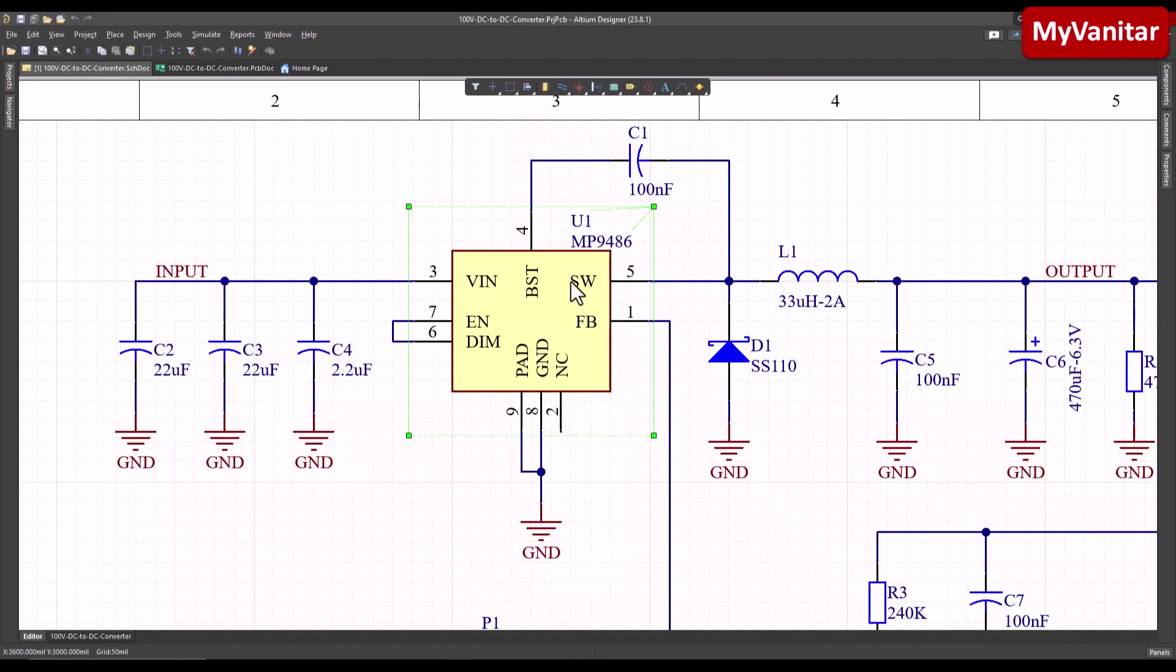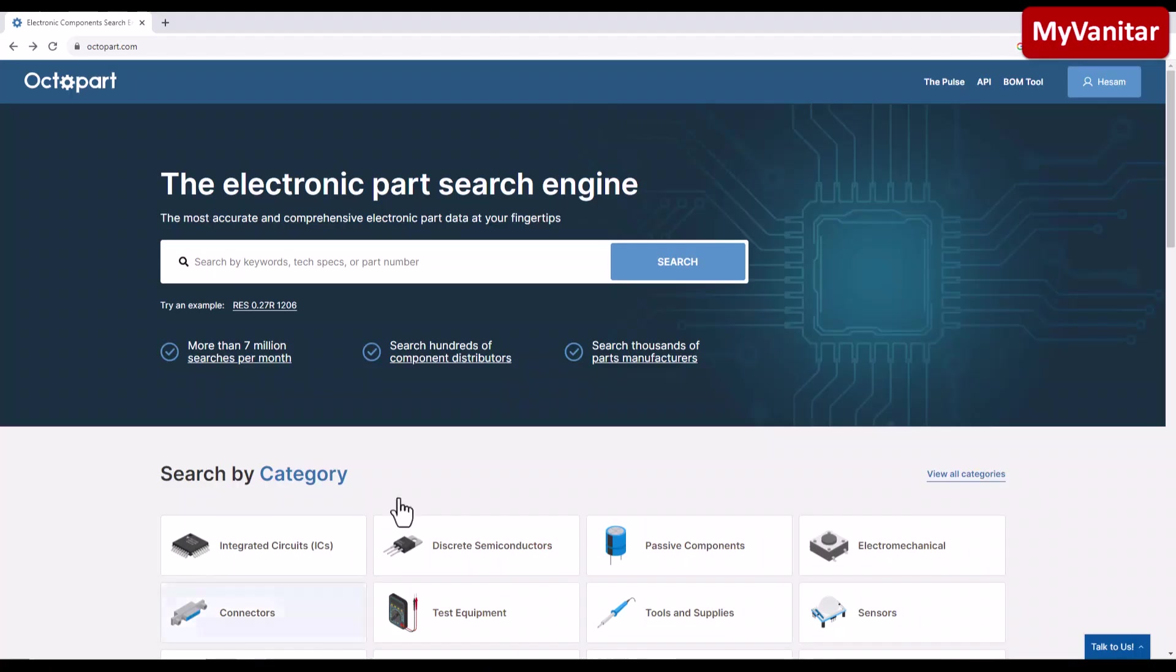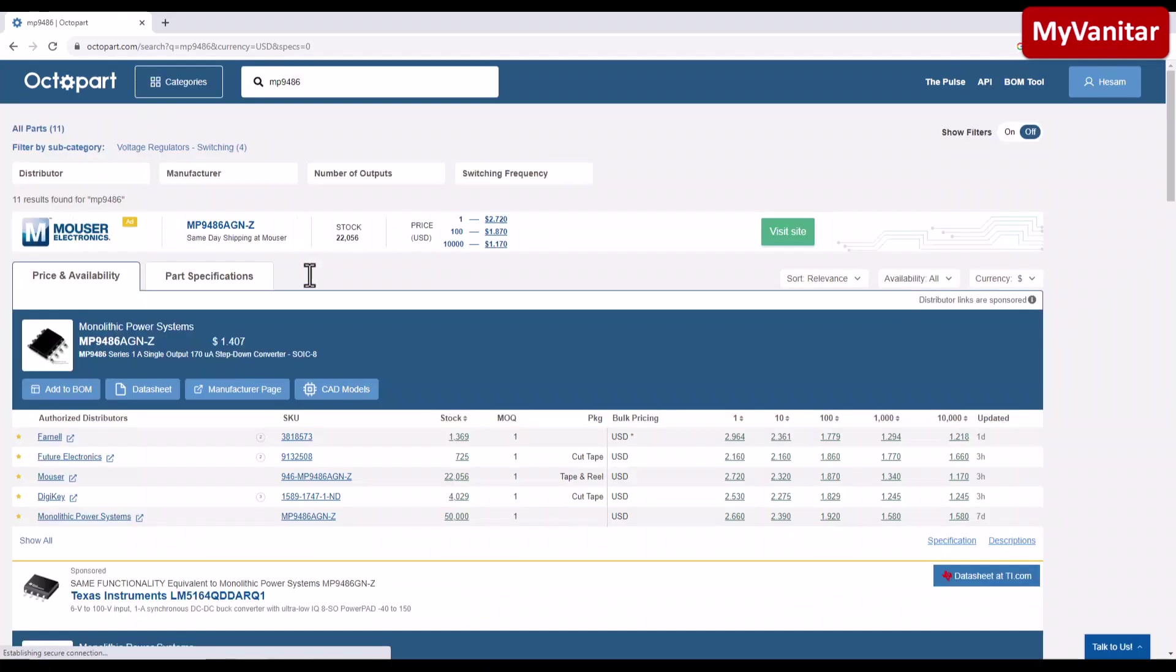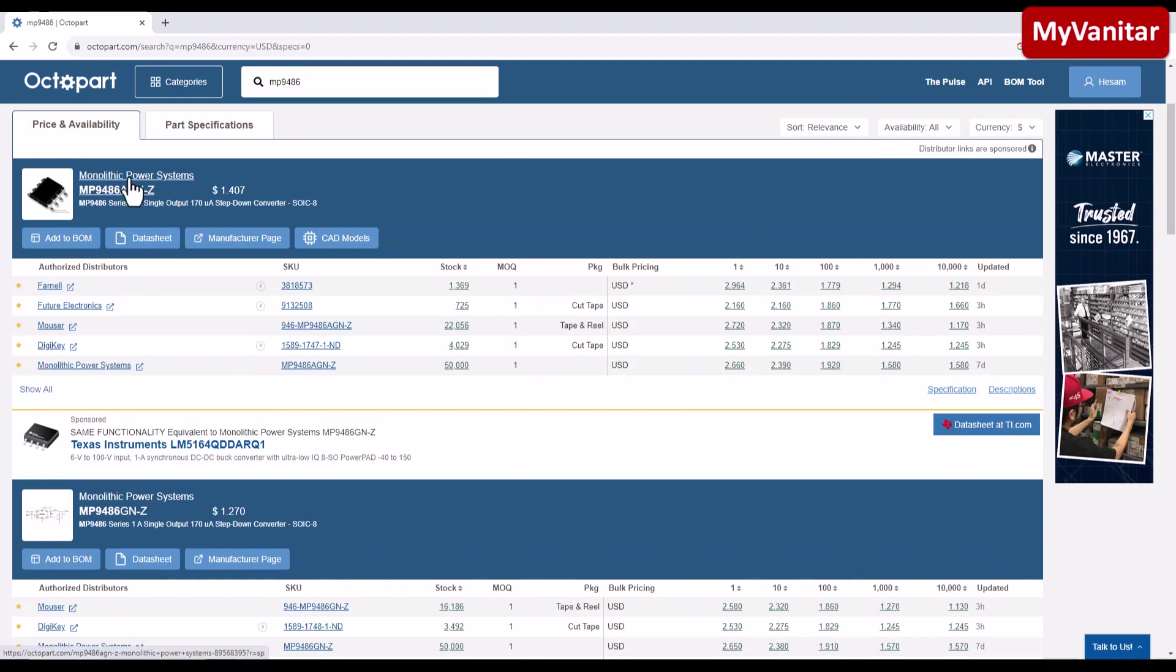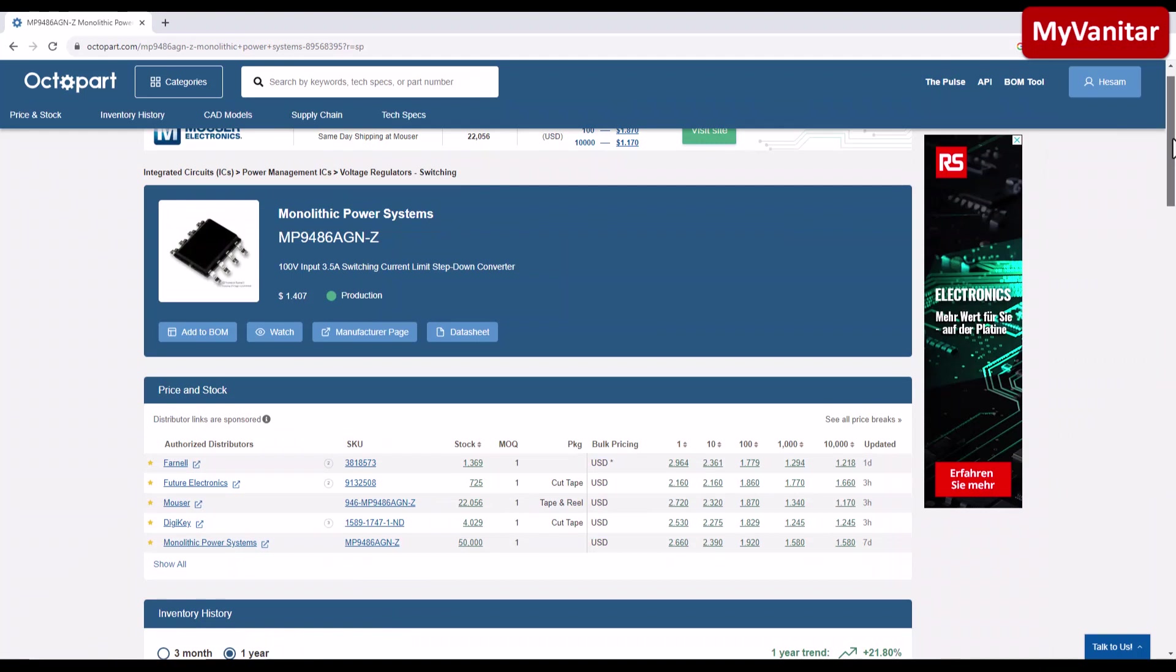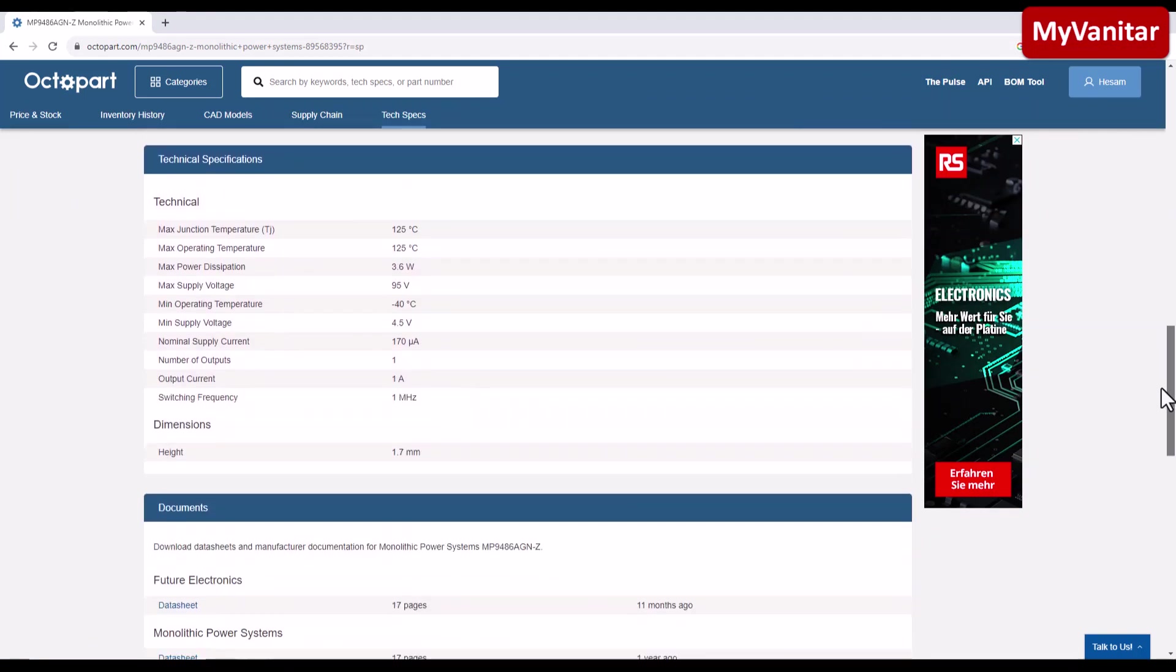But before I continue and go to the PCB, here is the PCB, I want to check this buck converter chip MP9486 chip in the Octopart. So MP9486 and the first results from the search results, the first one is the correct one and the manufacturer is monolithic power systems and if I come down exactly, I told you the output current, the maximum continuous output current is up to 1 amp.